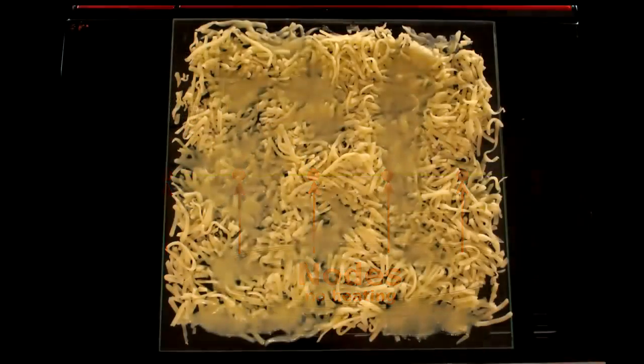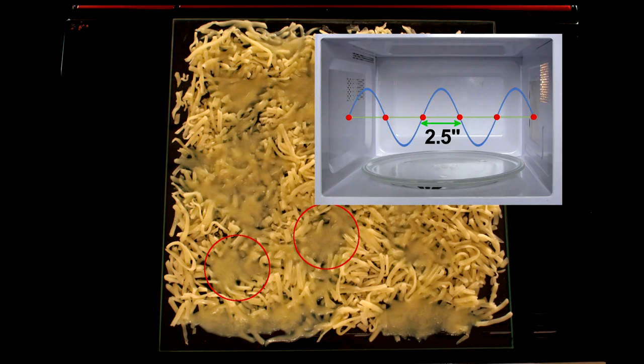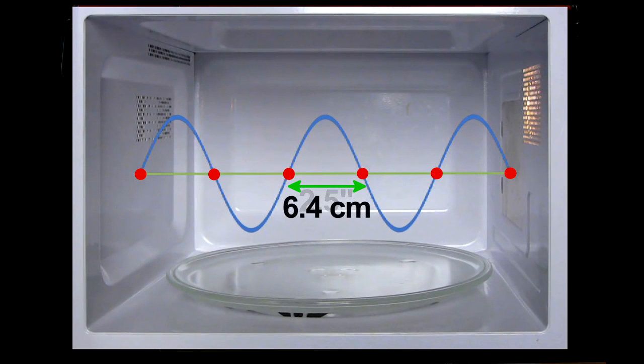If I measure the distance between melted cheese spots, I find about two and a half inches. That would be half the wavelength, the distance between nodes, and is pretty close to the actual wavelength of microwave radiation used.